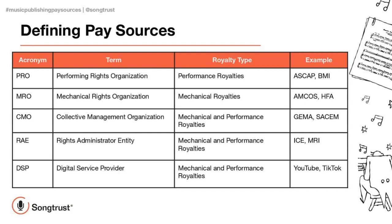There's another type of organization that typically does both. You find those organizations in various other countries in the world — like in France, there's SACEM, so they collect both the performance and the mechanical rights and pay it out to their members and publishers. And GEMA in Germany also does the same. Now, you can also collect mechanical and sometimes performance rights from organizations that are not classed as PROs, MROs, or CMOs. A really good example of that is MRI here in the US. MRI does a whole bunch of different things, and one of the things that they do is license and also pay out on mechanical royalties. Organizations like MRI, we like to term those as rights administrator entities.